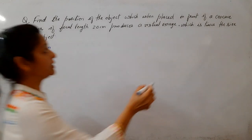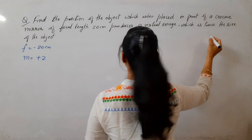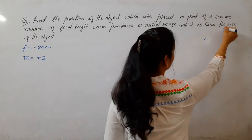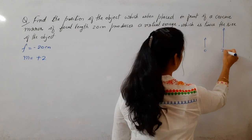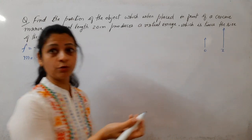Magnification, ya diya hai ki image which is twice the size of object. Agar object aisa hai, to image uski double hai. Agar object ye hai, to image uski double hai. Means magnification 2 hai.